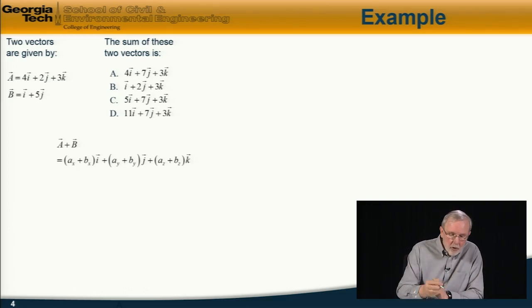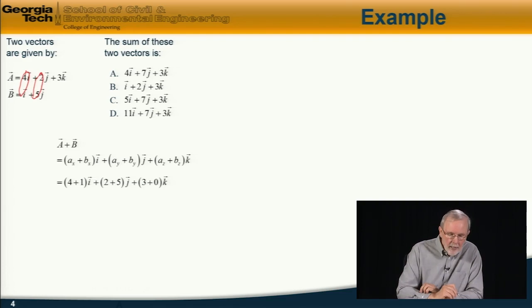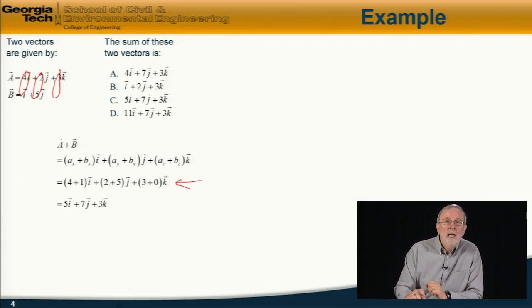So the sum of the vectors, we can just add up all of the individual components here. So in this case, the i component is 4 plus 1. The j component is 2 plus 5. And the k component is 3 plus 0, which is the equation which is given here. So expanding and computing that, we find that that is equal to 5i plus 7j plus 3k. And the answer is c.